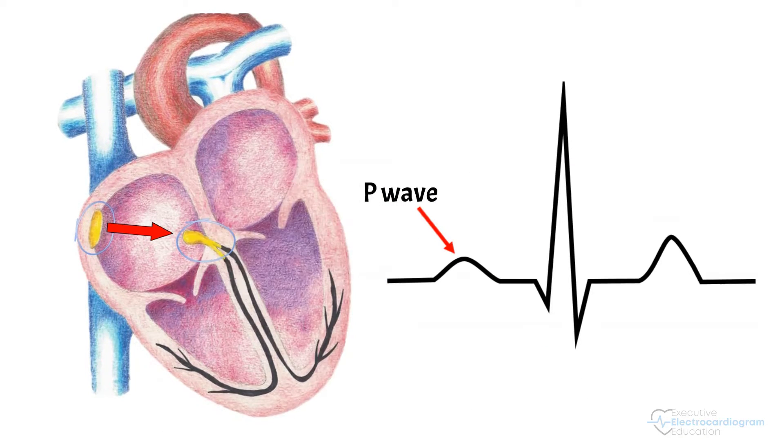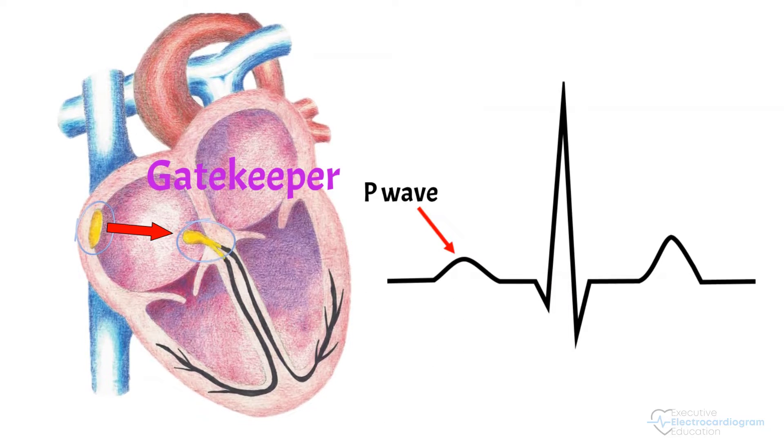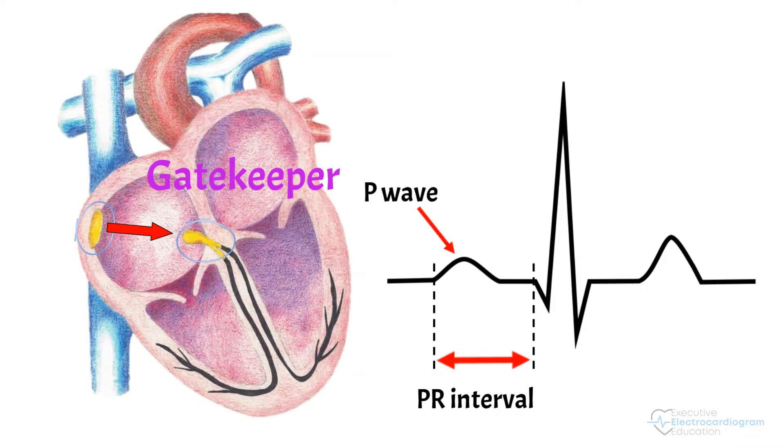The impulse then stops at the atrioventricular node. I think of the AV node as a gatekeeper that looks down into the ventricles to make sure everything is okay before letting the impulse through. This short pause is the PR interval.